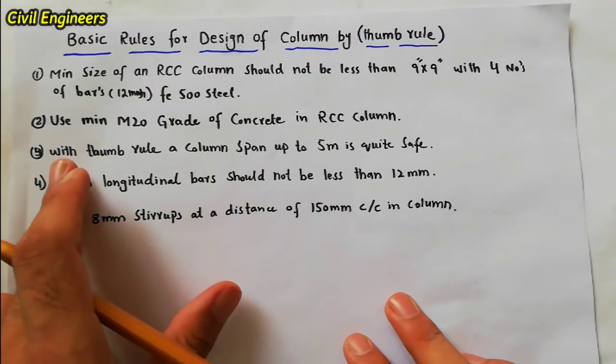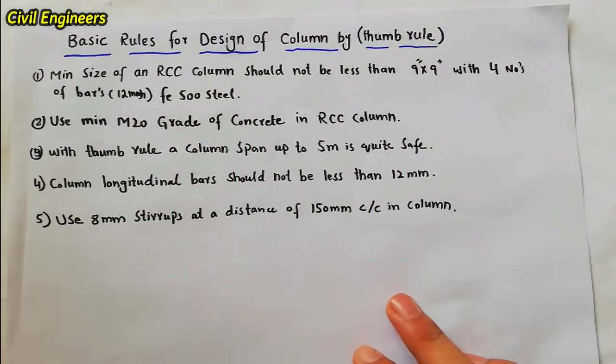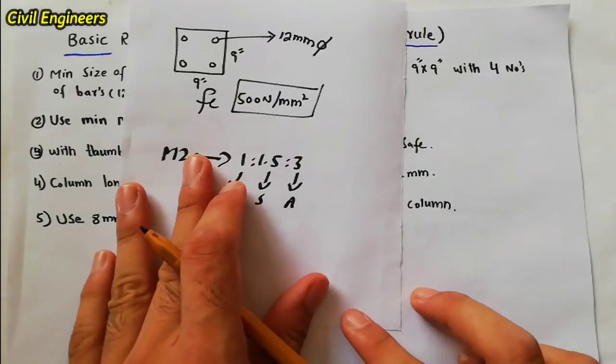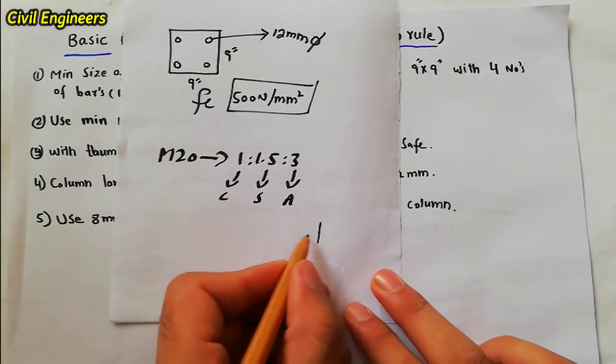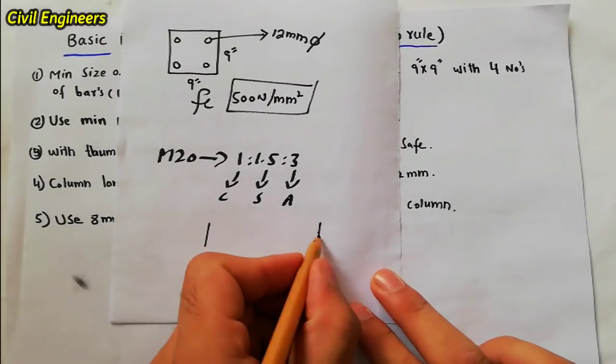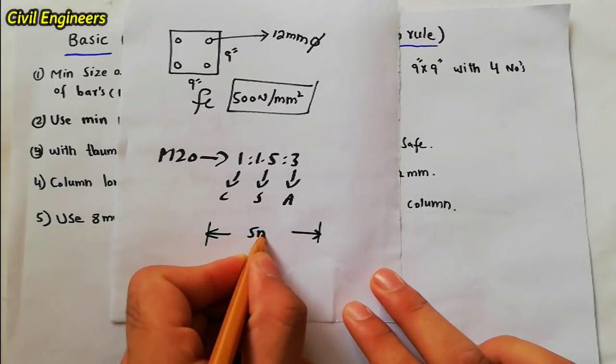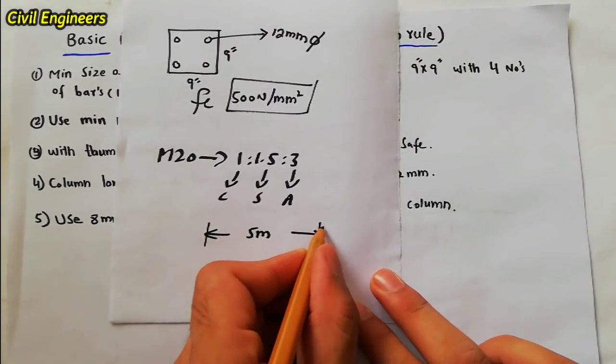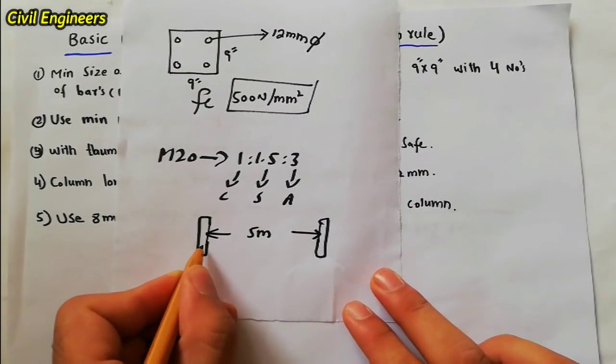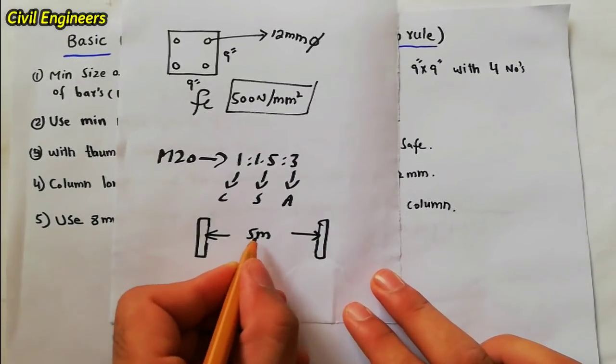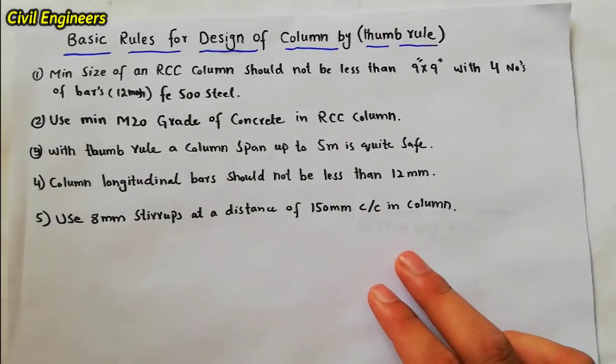The third one is with thumb rule a column span up to 5 meter is quite safe. If the span of two columns is 5 meter it is quite safe. So this is the column, if the span is up to 5 meter, this column is safe with thumb rule. This is one column, this is the second column. If the span is 5 meter it can support the load.